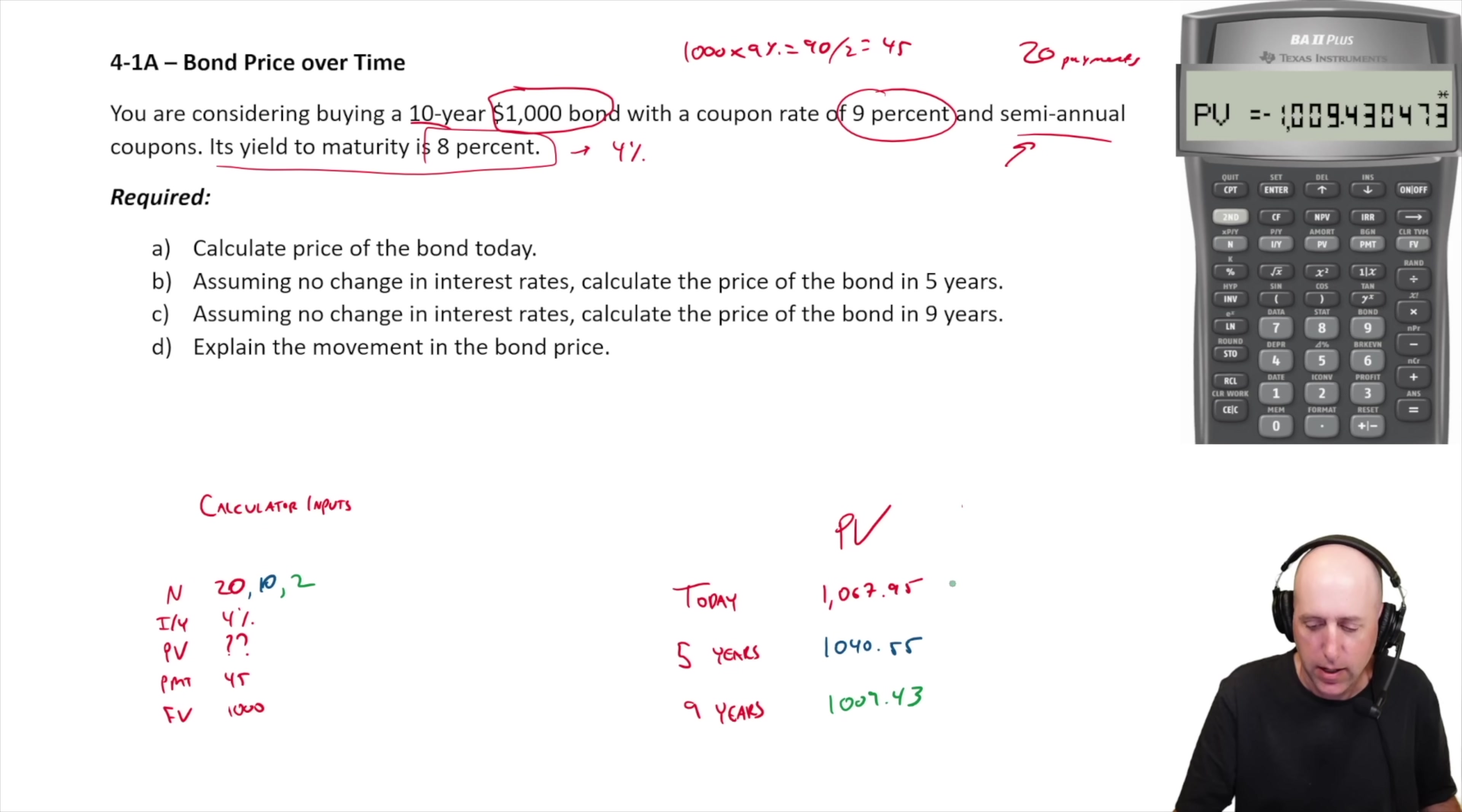So we've solved A, B, and C. Part D says explain the movement in the bond price. We expect bonds over time as they get closer and closer to the maturity date, in other words as they're getting closer and closer to the day they have to pay back, the value gets closer and closer to the face value. Any discount or premium, as we have a premium here, shrinks.